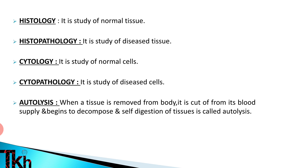So normal cell study is histology, and abnormal or diseased cell study is cytopathology. The next definition is autolysis. When a tissue is removed from the body, it is cut from its blood supply and begins to decompose. This self-digestion of the tissue is called autolysis.